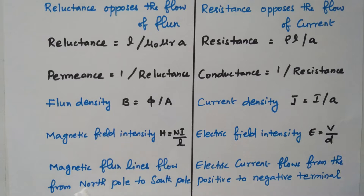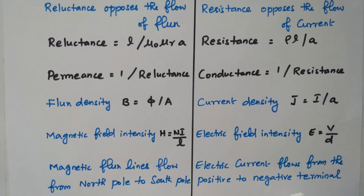Magnetic flux lines flow from the north pole to the south pole. Similarly, electric current flows from the positive to the negative terminal. These are all the analogies between the electric and magnetic circuit. Thank you.